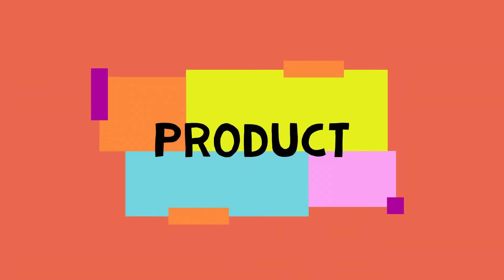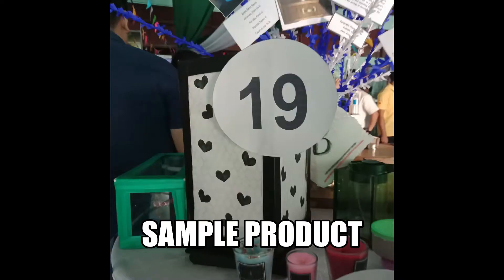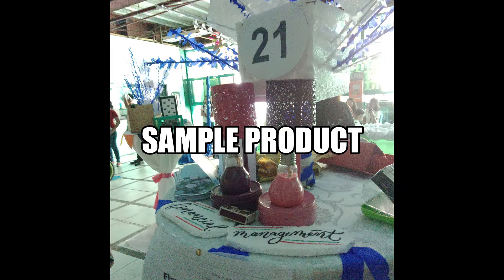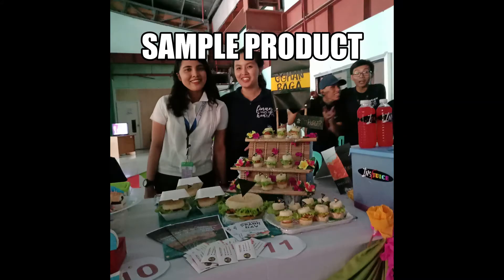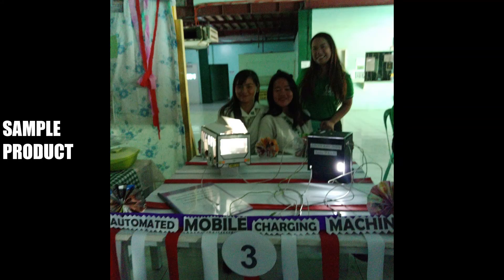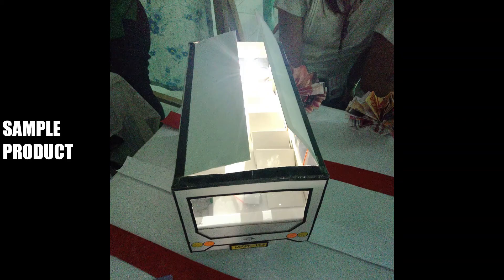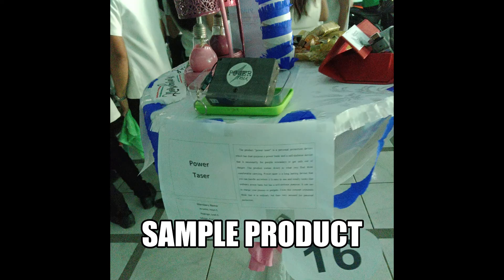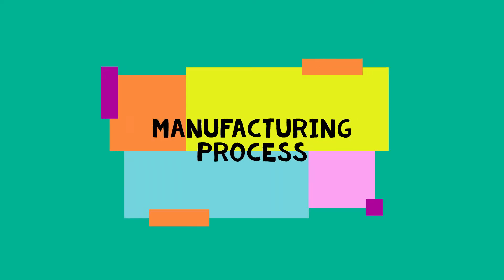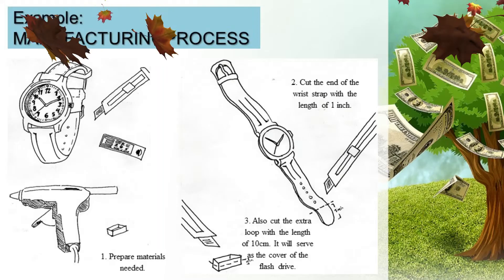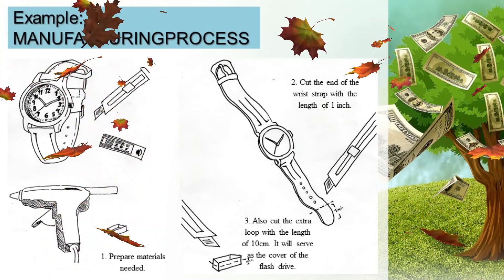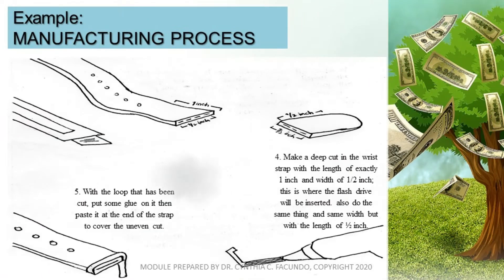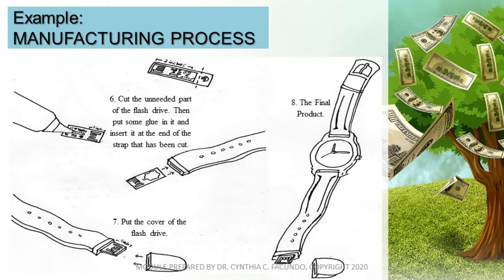Product is your idea on what you will sell in your business proposal. A product can be a good, which can be perishable, and services in exchange of money for the services you have given. Manufacturing process are the steps through which raw materials are transformed into a final product. It begins with the product design and materials specification from which the product is made.